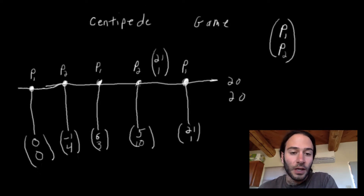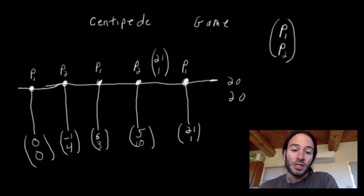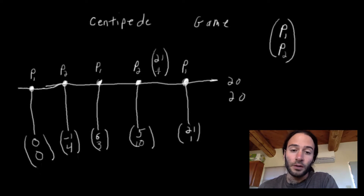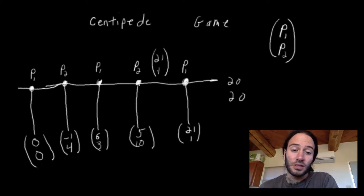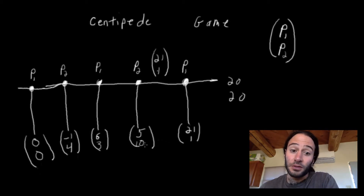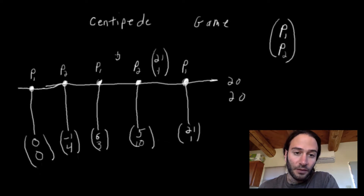Now we look at player two's second decision node. If player two keeps going, it only gets a payoff of 1 because it knows player one will choose stop. But if player two chooses to stop, it'll get a payoff of 10. So player two will choose stop because 10 is better than 1. I'll put up here the payoffs 5 and 10.